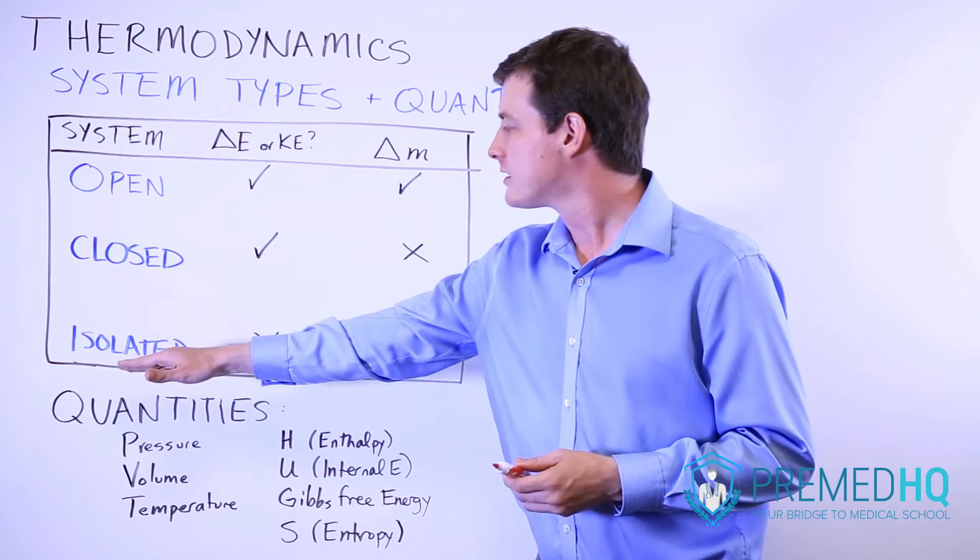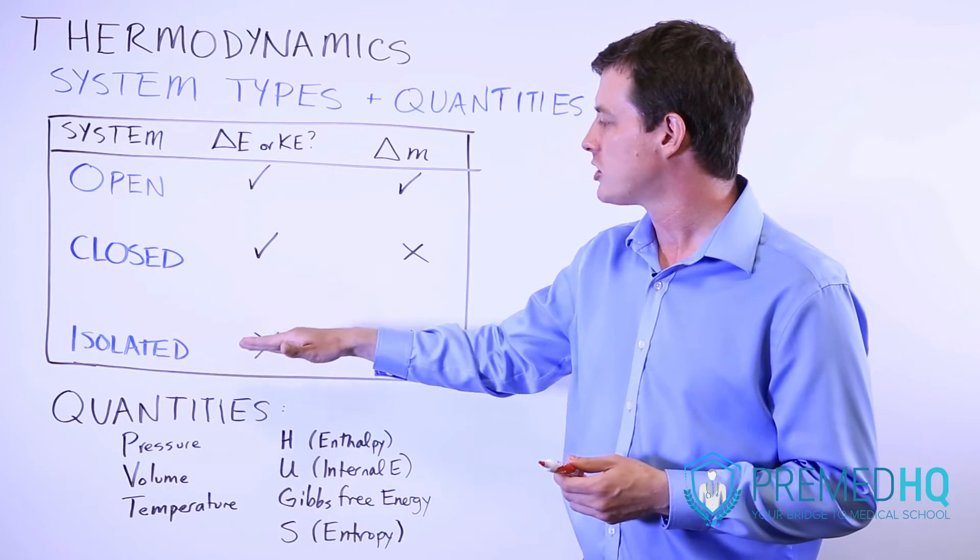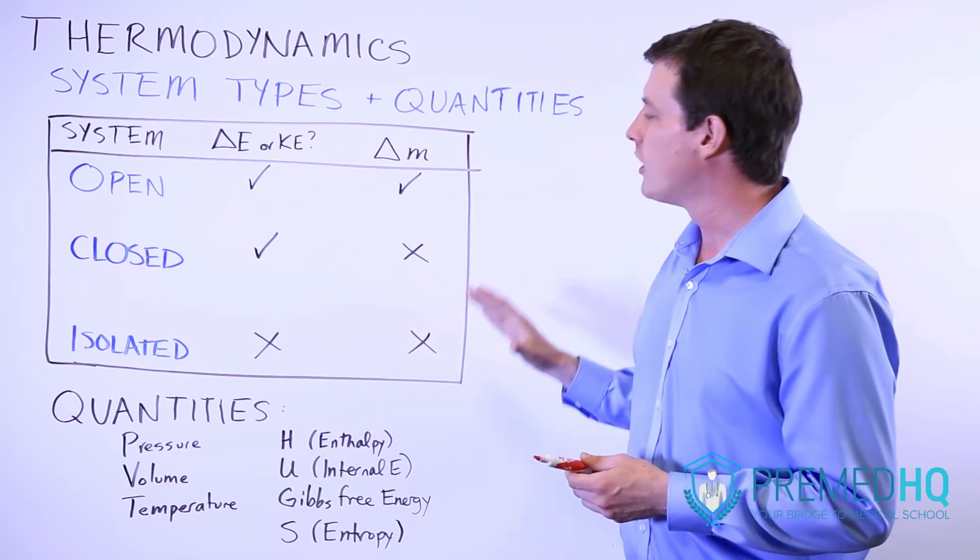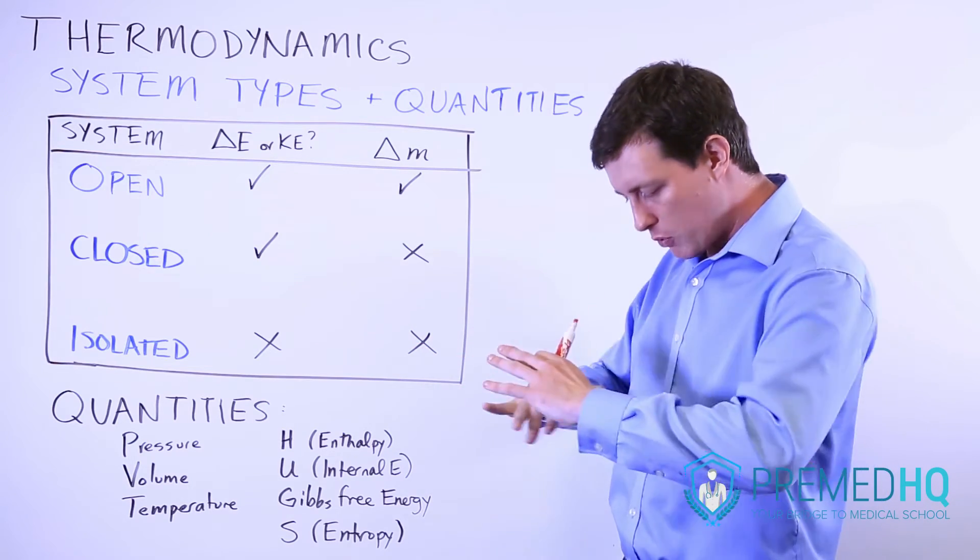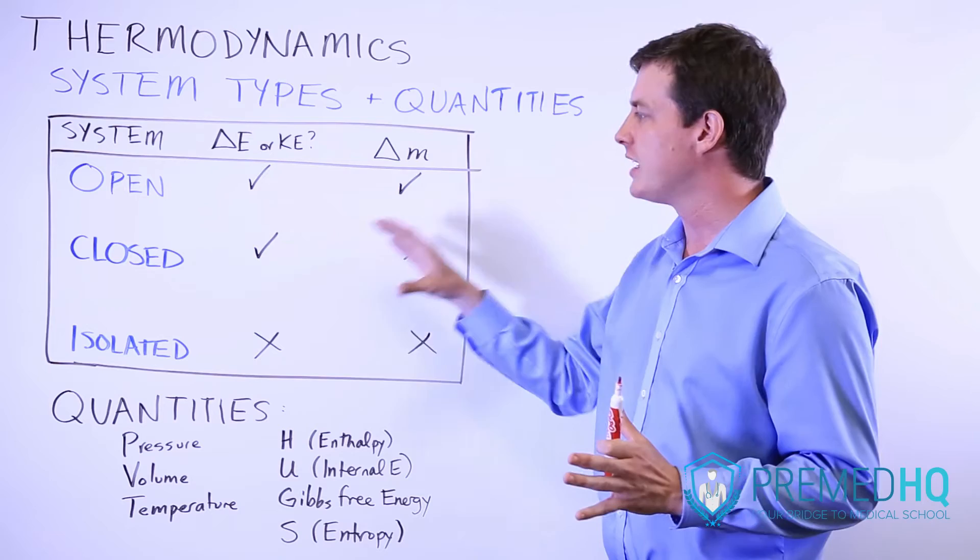Whereas an isolated system is one that cannot exchange energy nor matter with its surroundings. So an isolated system is more insulated from everything else than any other type.